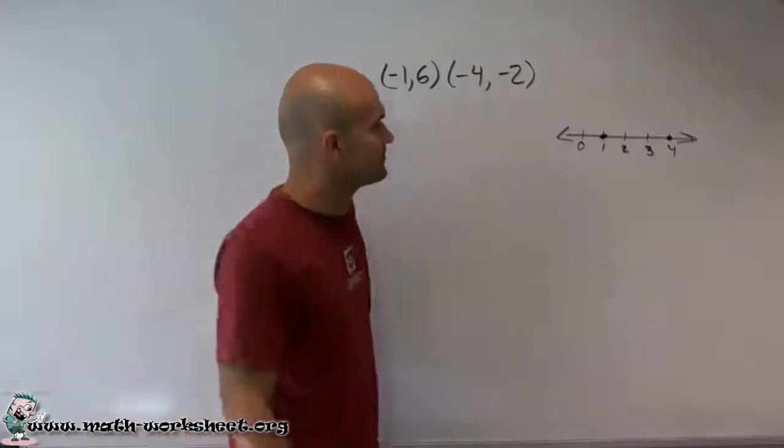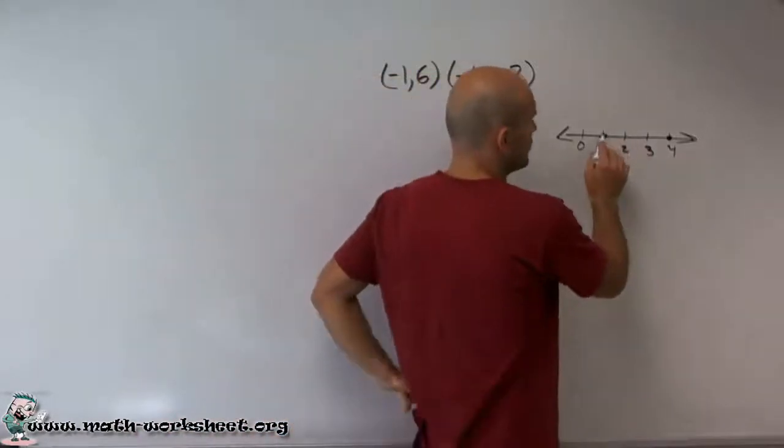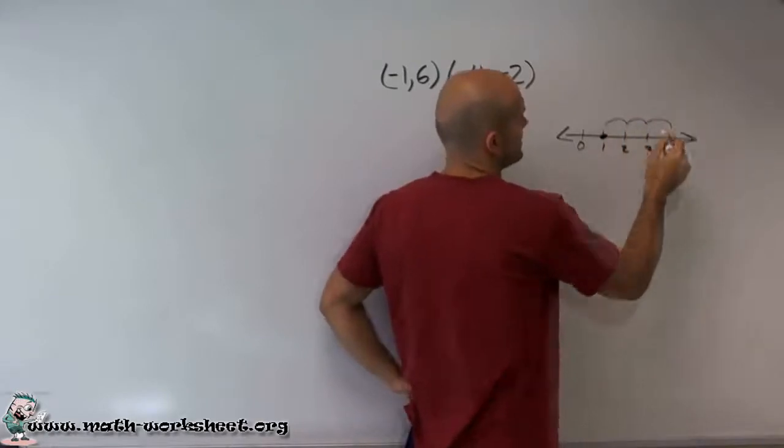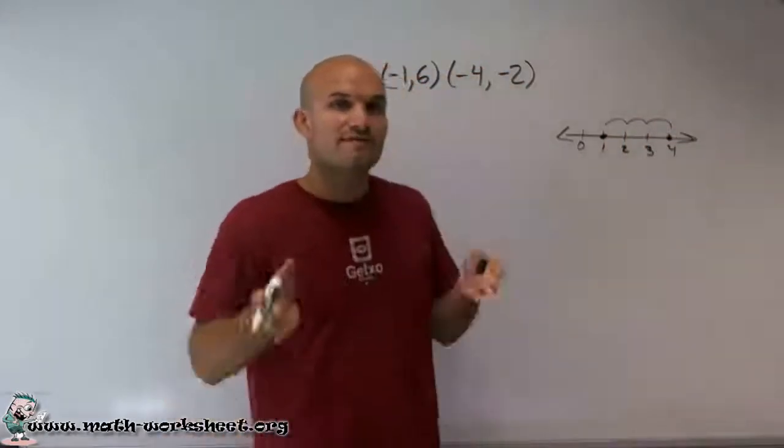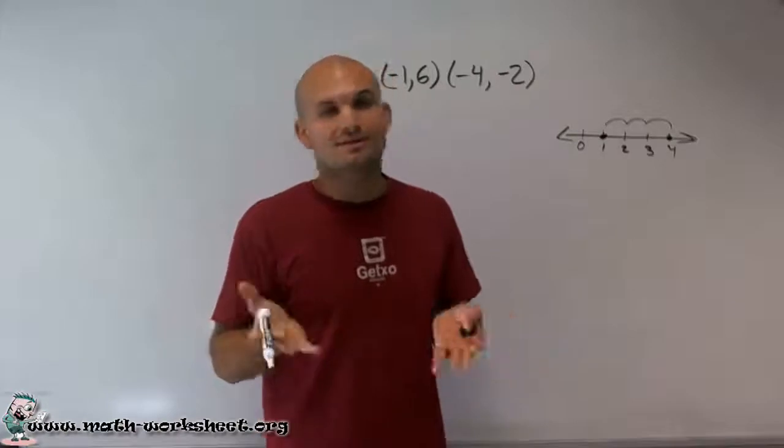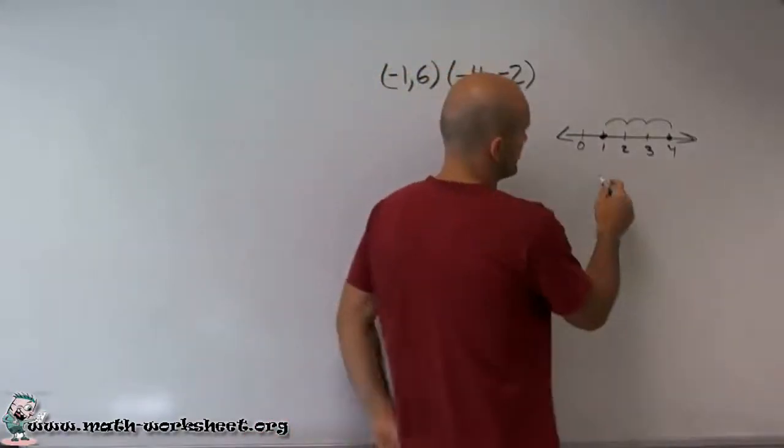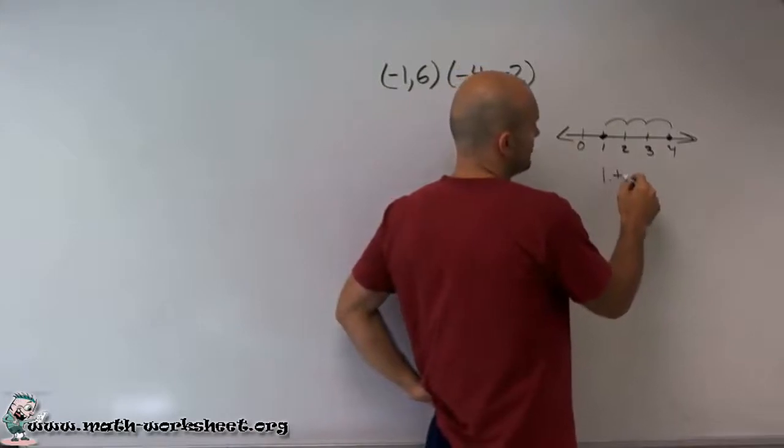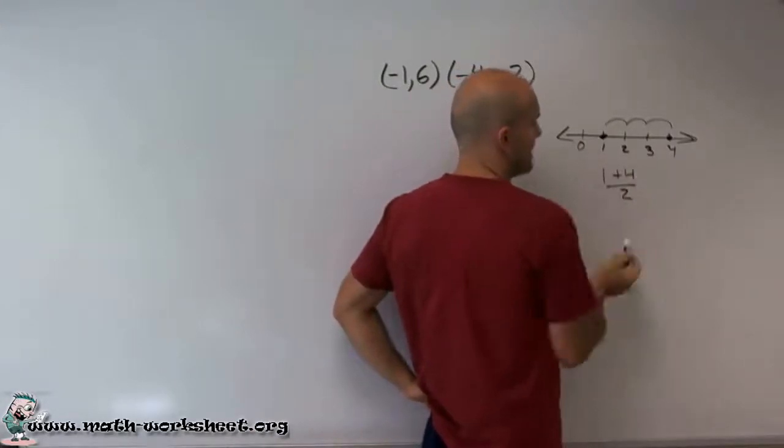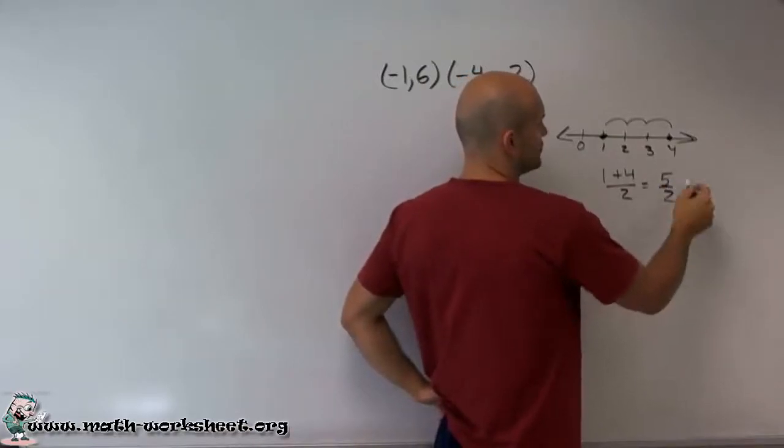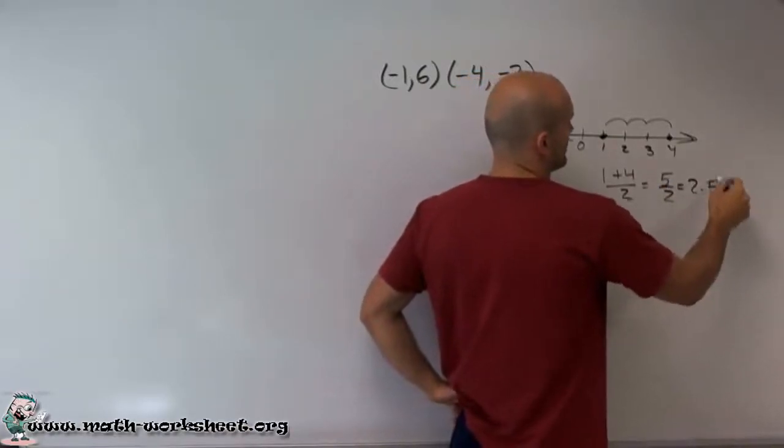So to do that, what we could do is you could say, well, to get from 1 to 4, it takes me three steps. So to find the middle, what we can do is find the average right in that middle point. So what I can do is I can write 1 plus 4 and then divide by 2. So 1 plus 4 is 5 divided by 2, which equals 2.5.